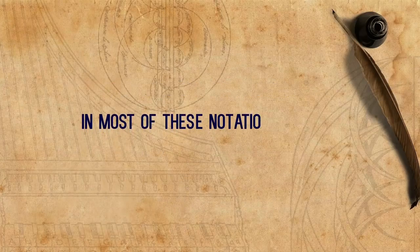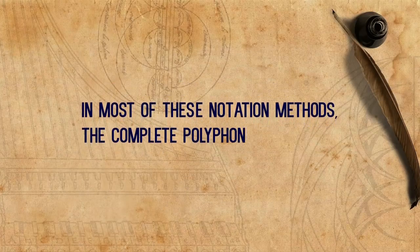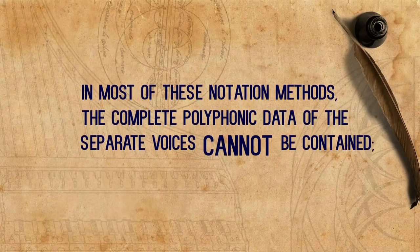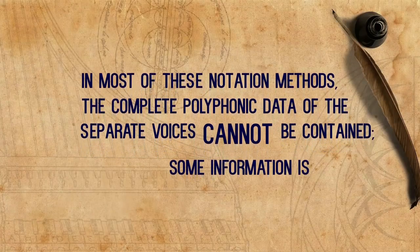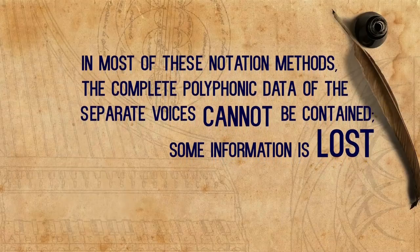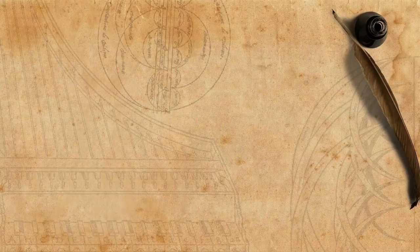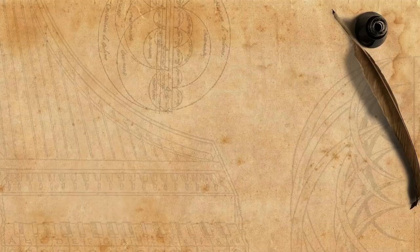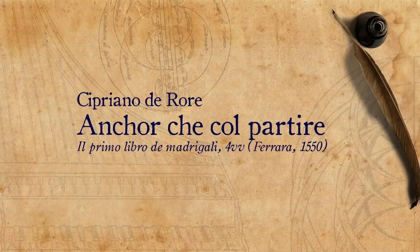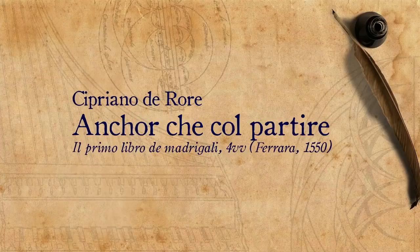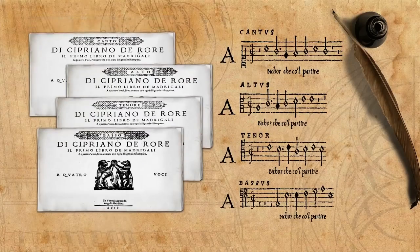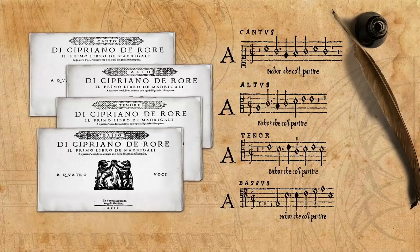In most of these notation methods, the complete polyphonic data of the separate voices cannot be contained — some information is lost, in some methods more than others. To demonstrate that, let's see how the opening of the madrigal Ancor che col partire by Cipriano de Rore was intabulated using the different methods. But let's first check what the original 1550 part books look like.